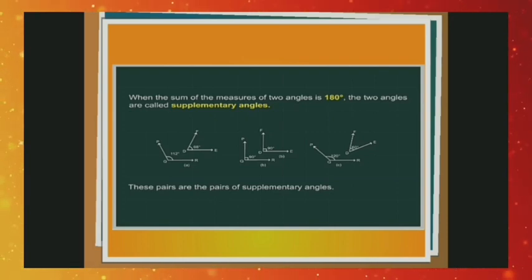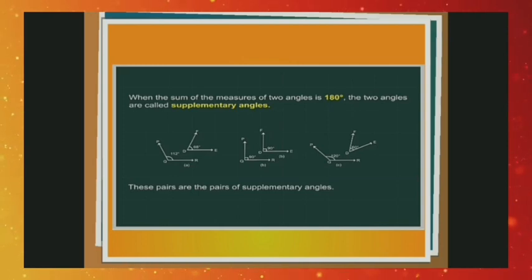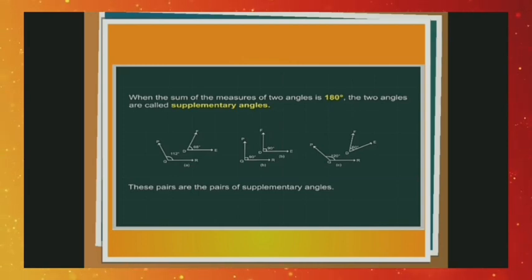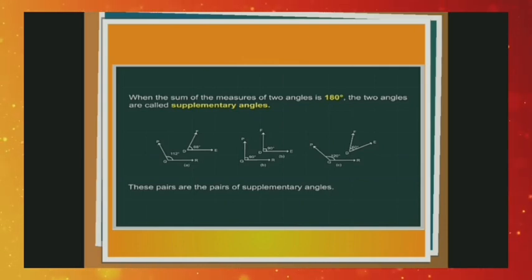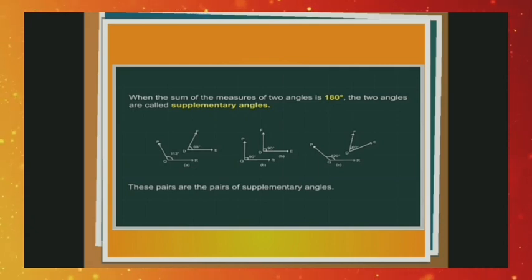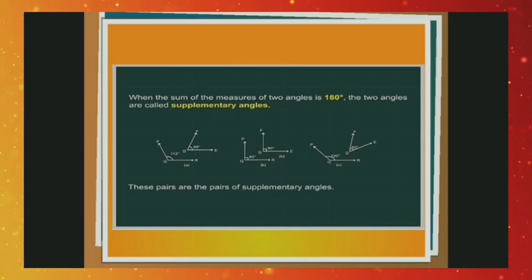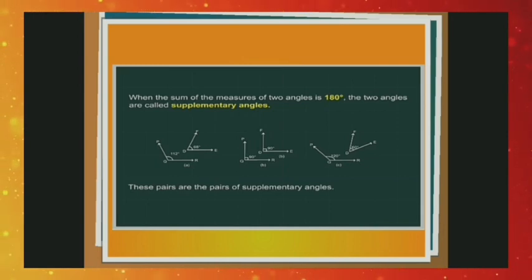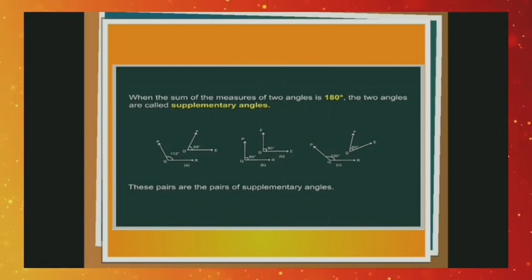Supplementary angles: when the sum of the measures of two angles is 180°, then the two angles are called supplementary angles. These pairs are pairs of supplementary angles. When two angles are supplementary, each angle is said to be the supplement of the other. So in this figure, 90° is the supplement of 90°.